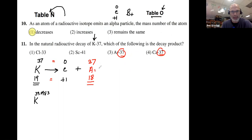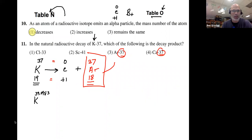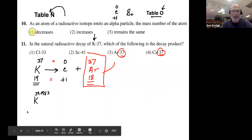Argon (Ar) is atomic number 18. So the decay product is argon-37, and that is the answer.